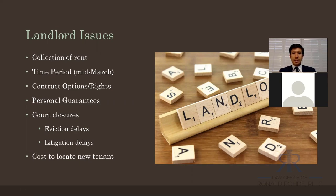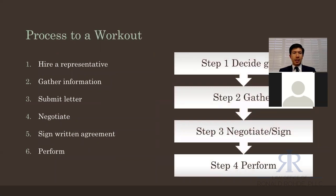Here's the process: hire a representative, gather information, and submit a letter — a lot of times that's all we need to open channels of communication. Be clear to the landlord about what's going on, give them insight into your business, negotiate, and get a written agreement. I can't stress that enough — don't just rely on an email from a property manager saying 'yeah, it's fine, you can pay late.' Get it in writing and then perform. Follow through on what you say you'll do, on both sides — landlord and tenant. That's really going to improve relationships going forward.